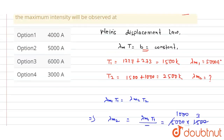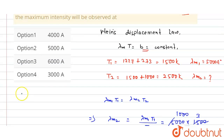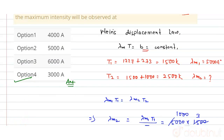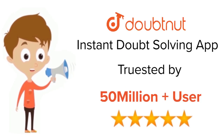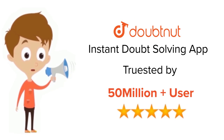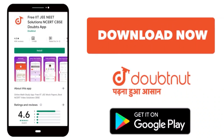We match this with the options and it matches option 4, so that is the right answer. I hope you understood — thank you. For class 6 to 12th, IIT-JEE and NEET level, trusted by more than 5 crore students. Download DoubtNut today.